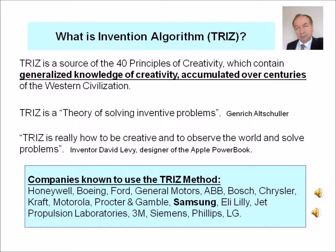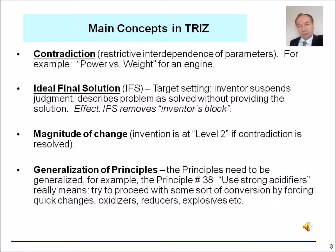One remarkable company which achieved a lot of success due to the introduction of TRIZ is the South Korean company named Samsung. The main concepts in TRIZ are contradiction — i.e., restrictive interdependence of parameters — the ideal final solution, where the inventor suspends judgment and describes the problem as already solved without providing the solution, the magnitude of change, at level 2 the contradiction is resolved, and the generalization of principles, where the principles are viewed as just an indication, a hint, leading into the creative solution.